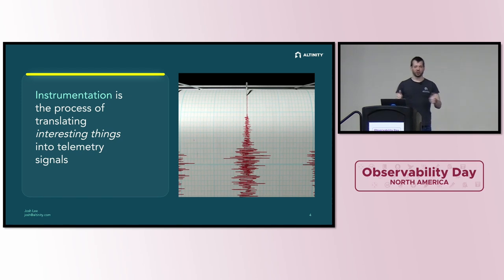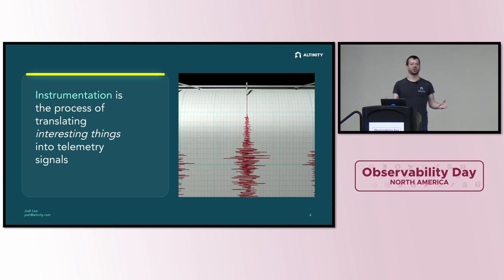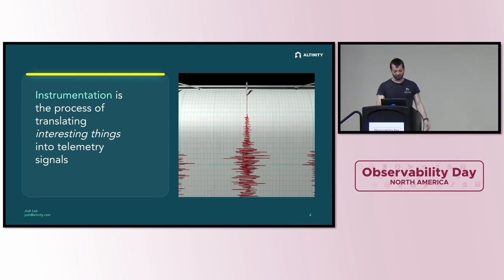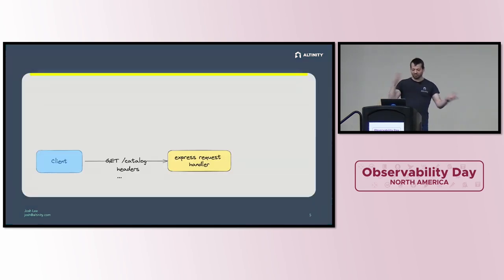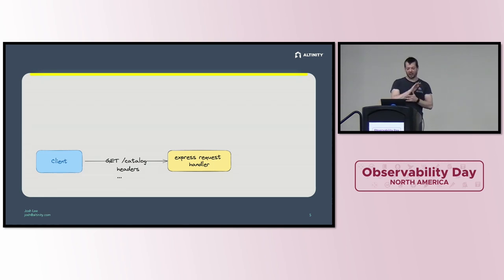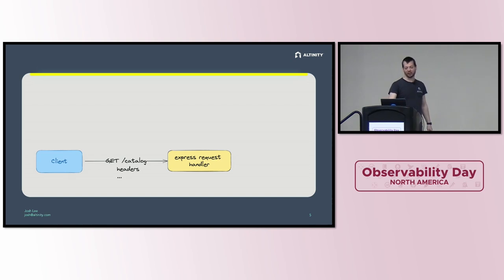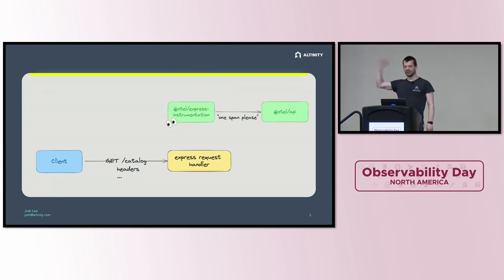Just a quick definition so we're all on the same page. Instrumentation is the process of translating interesting things — and I'm not going to be too specific about what those interesting things are because that depends on you — into telemetry signals. So for example, we have a client making a request, maybe to a Node.js backend with an Express request handler, and instrumentation's job is to look at that and say: we need a span.